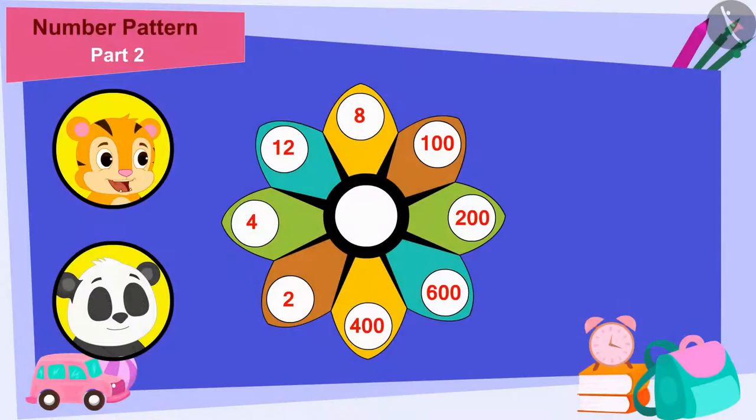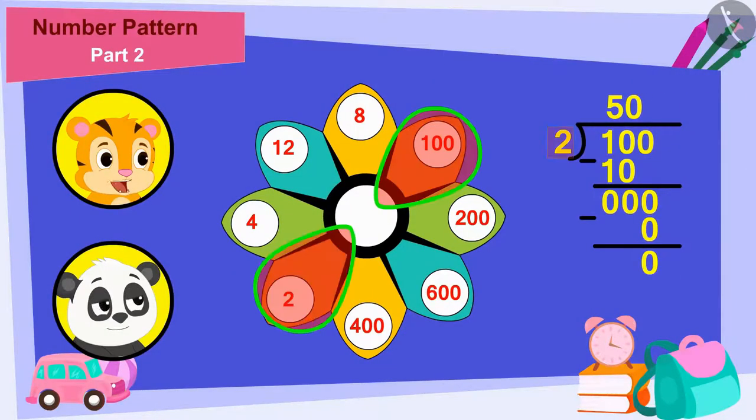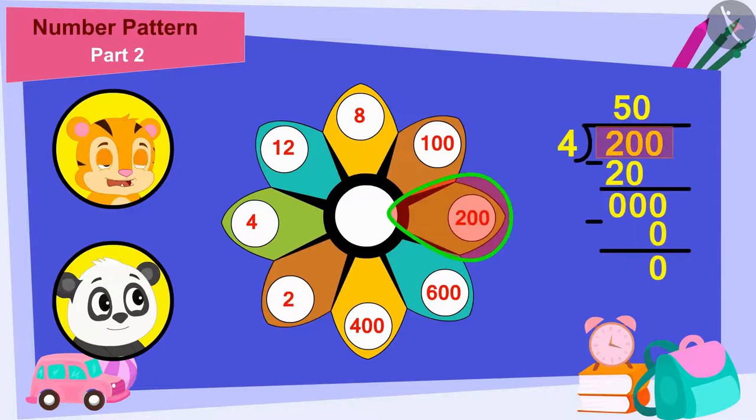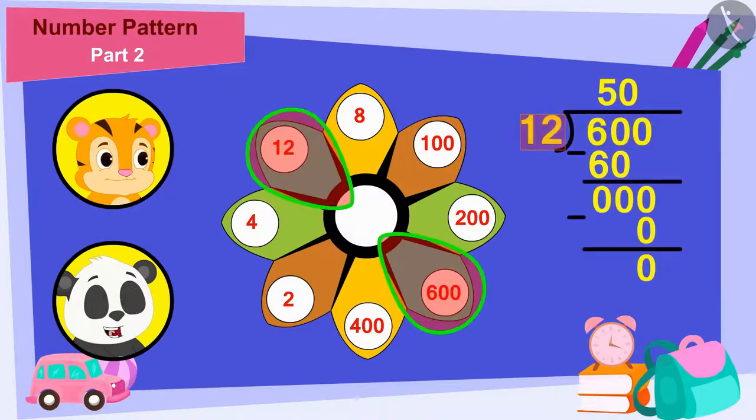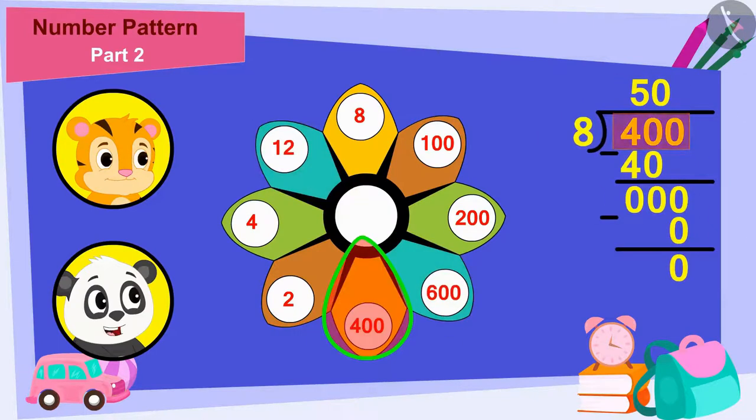'Look Golu, if I divide the number 100 by 2, the answer will be 50. And even when I divide the number 200 by 4, the answer will still be 50,' Share Khan said excitedly to Golu. 'Yes, and even if we divide 600 by 12, the answer is still 50. And finally if we divide 400 by 8, the answer is still 50.'